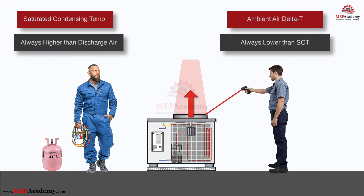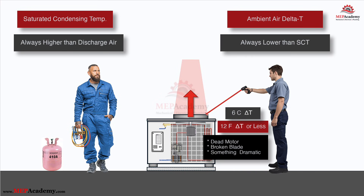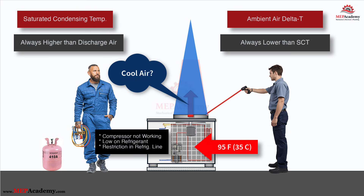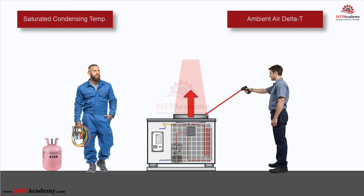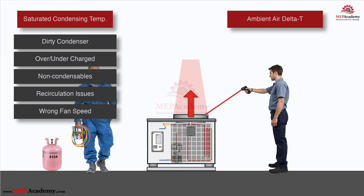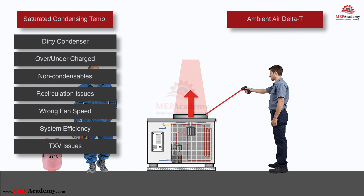Air delta T is great for two things: gross airflow problems — if the air rises 12°F or less, the fan is barely moving air; dead motor, broken blade, something dramatic — and as a quick sanity check that the system is doing something. If the discharge air is cool on a 95°F day, you instantly know the compressor isn't running or you're critically low on charge. Anything more subtle and air delta T lies to you. Real condenser TD tells you the actual health of the high side: dirty or blocked condenser coil, overcharge, undercharge, non-condensibles, recirculation, wrong fan speed on a variable speed unit, and whether a high efficiency unit with a big coil is running at its designed 15 to 18°F temperature difference. Air delta T can't see any of that reliably because coil design, fan speed, and airflow change the air rise even when the refrigerant temperature is perfect.